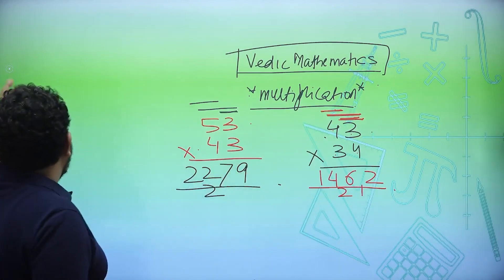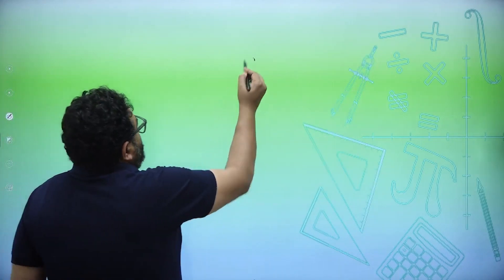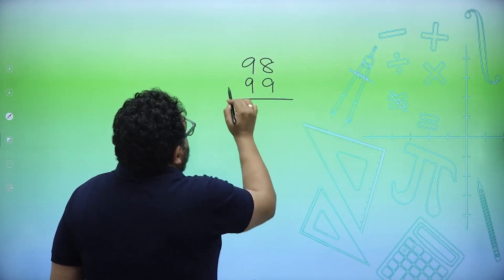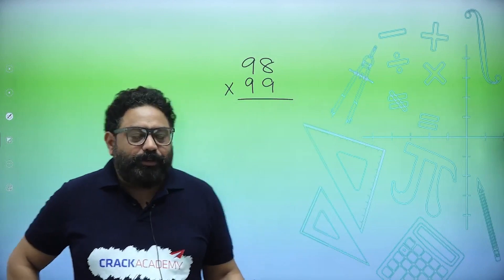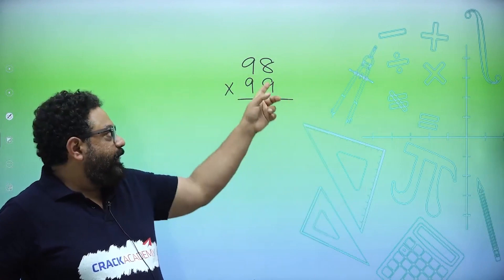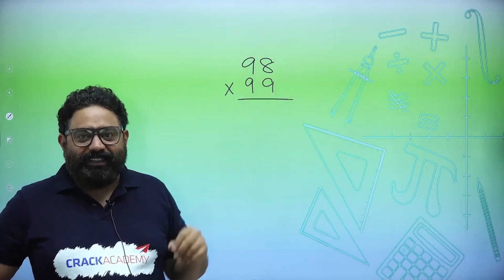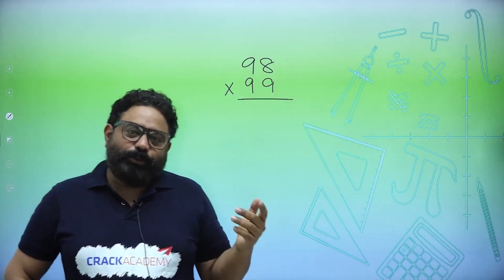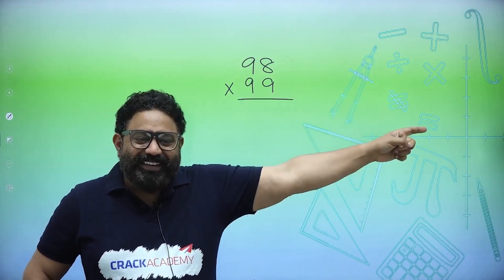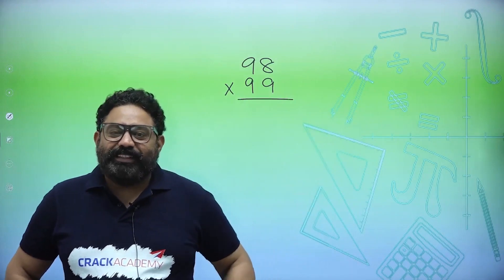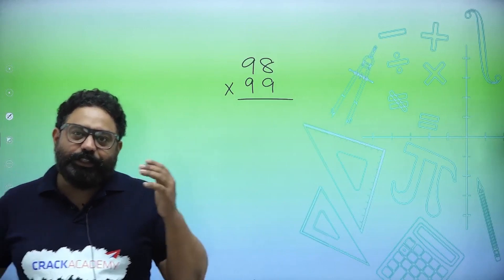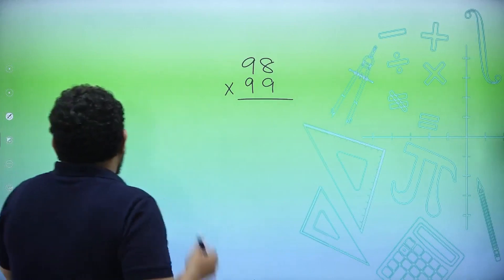Then comes Vedic math trick. If I say what is 98 into 99, this would actually be very tough because you cross multiply: 9 eights are 72, 2 written, 7 carry, 9 nines are 81, 8 nines are 72, 81 plus 72 - it would be tough, you would have to write it somewhere on rough and then use it. So what is Vedic math? It is use of 10 and its power to make calculation very easy.